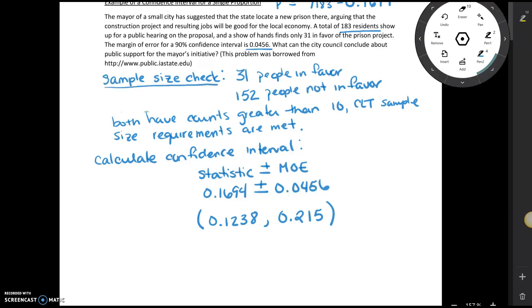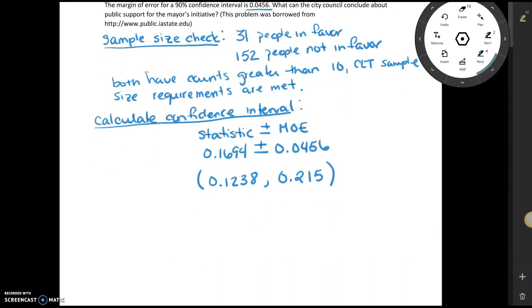We've done our sample size check, we've calculated our confidence interval, and so next, the last thing we're going to do is give our interpretation. Our interpretation always needs to include three things: it needs to include our level of confidence, we're going to reference the parameter, and then we're going to give our interval. Our interpretation here is we are 90% confident.